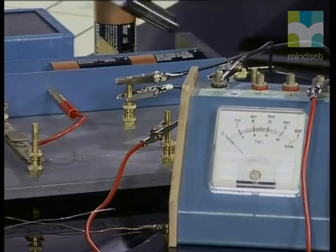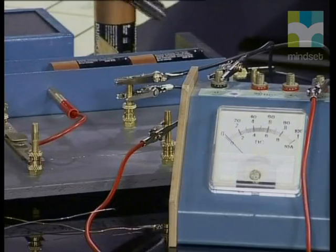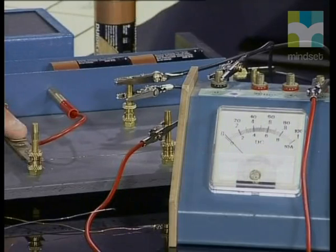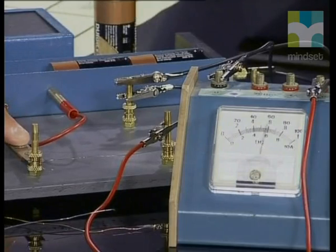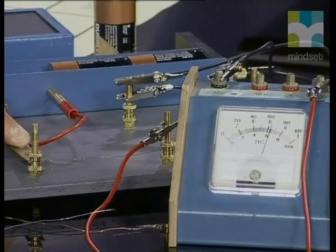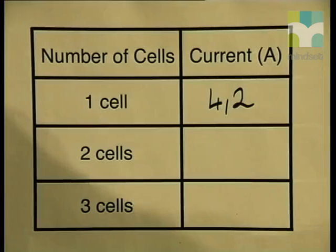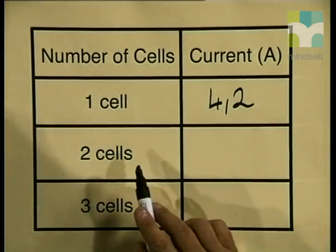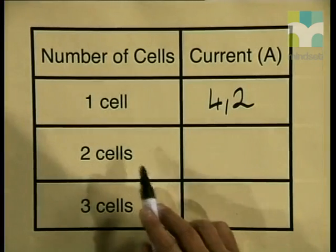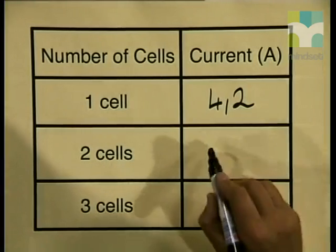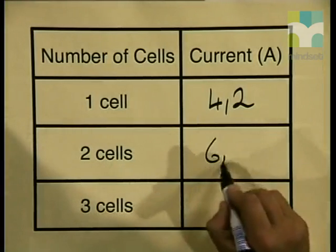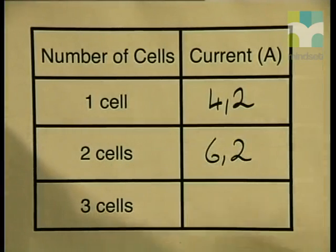I have now put two cells into the electrical circuit. Closing the circuit again, we notice that the ammeter reading has stabilized at about 6.2 amperes. For two cells we have a current reading of 6.2 amperes.